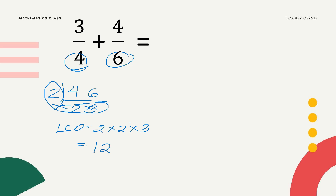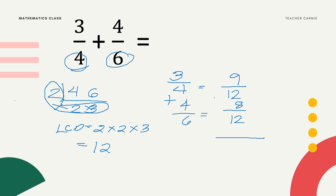After finding the LCD, we change 3/4 plus 4/6 using LCD 12. Divide the LCD by each given denominator: 12 divided by 4 is 3, multiply by 3 equals 9. Then 12 divided by 6 is 2, times 4 equals 8. Applying the rules for similar fractions, we just add the numerators: 9 plus 8 equals 17 over 12.